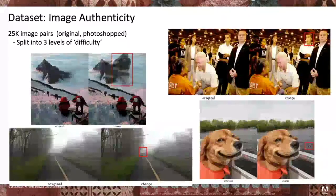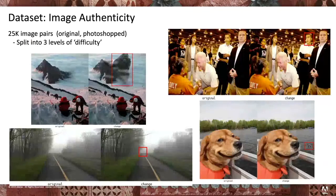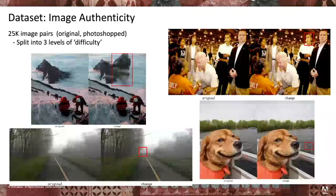To train a model with these features, we're using a dataset called Photoshop Battles. We curated a subset of 25,000 image pairs of originals and their Photoshop counterparts — some with obvious changes, some with very subtle differences. The challenge is to have a fingerprint that can distinguish between these fine-grained changes.